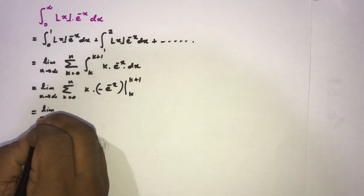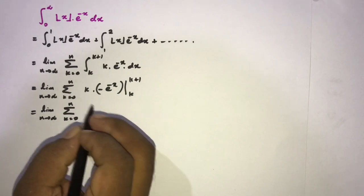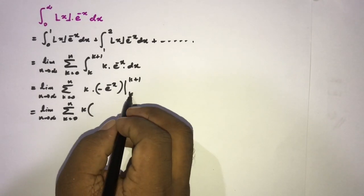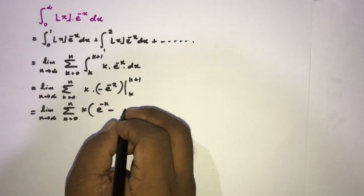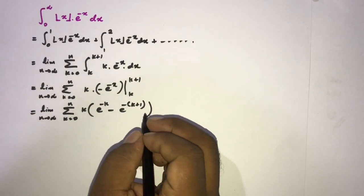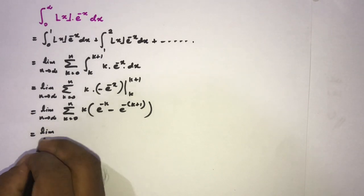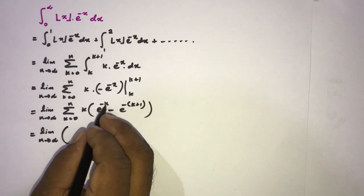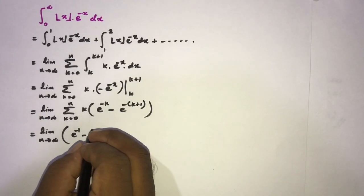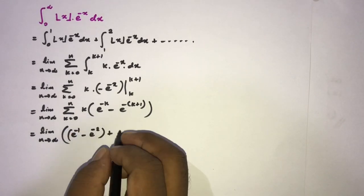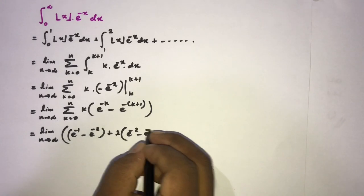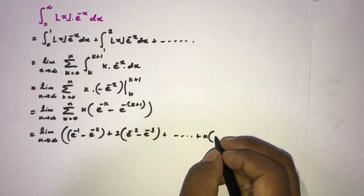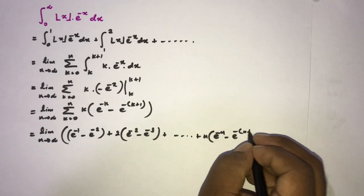Plugging in the boundaries: at k plus 1 we get negative e to the minus (k+1), and at k we get negative e to the minus k, giving k times (e to the minus k minus e to the minus (k+1)). Writing out the first terms: for k=1 we get e to the minus 1 minus e to the minus 2; plus 2 times (e to the minus 2 minus e to the minus 3); and so on, up to n times (e to the minus n minus e to the minus (n+1)).